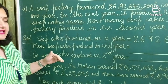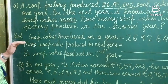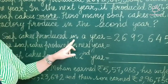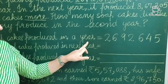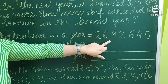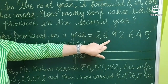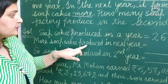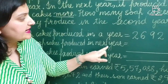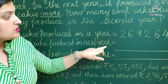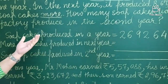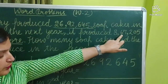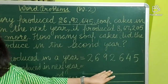So how will you write the statement? You will write the statement like this: soap cakes produced in a year — this is the first amount. Next, more soap cakes produced in next year — and next year it is producing this much amount of soap cakes, so we write it here.